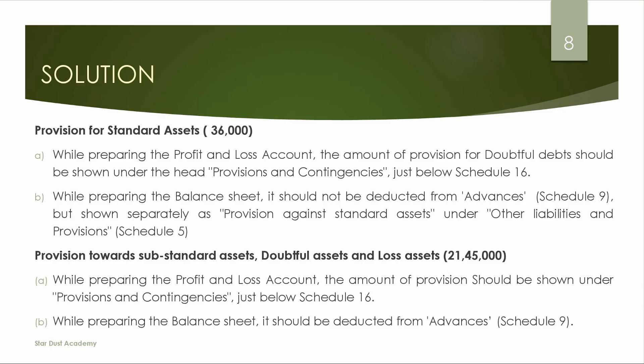For other provisions — Sub-Standard Assets, Doubtful Assets, and Loss Assets — the total provision (excluding Standard Assets of 36,000) is 21,045,000. While preparing the Profit and Loss Account, all provisions are shown under Provisions and Contingencies. The total provision is 21,081,000, of which 36,000 relates to Standard Assets.